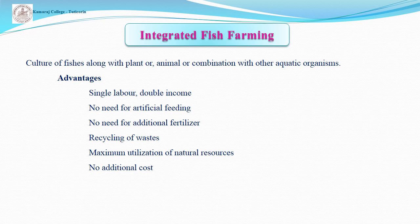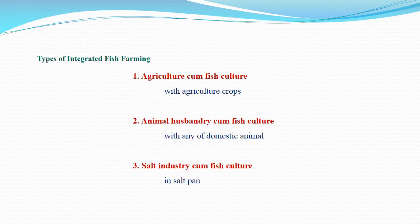Integrated fish farming is broadly classified into three types: agriculture-cum-fish culture, animal husbandry-cum-fish culture, and salt industry-cum-fish culture. Agriculture-cum-fish culture means the culture of fish along with an agricultural crop, also called paddy-cum-fish culture. Animal husbandry-cum-fish culture means fish culture along with any one domestic animal. Salt industry-cum-fish culture means prawns and fishes are reared alongside salt production.